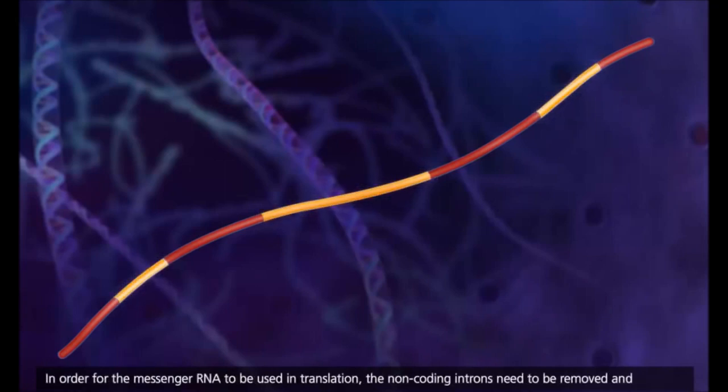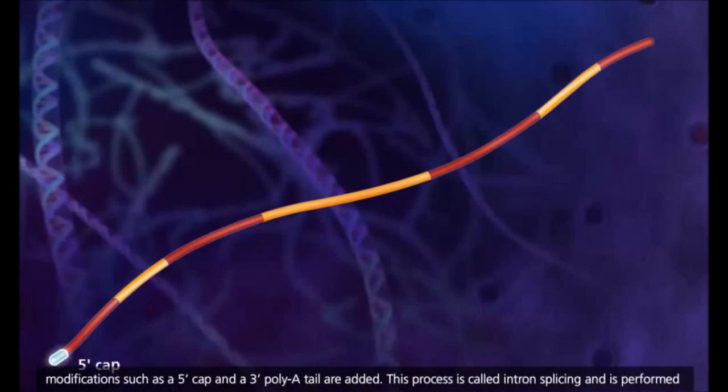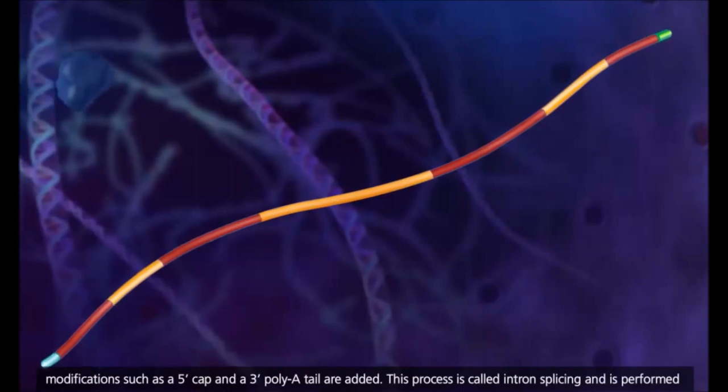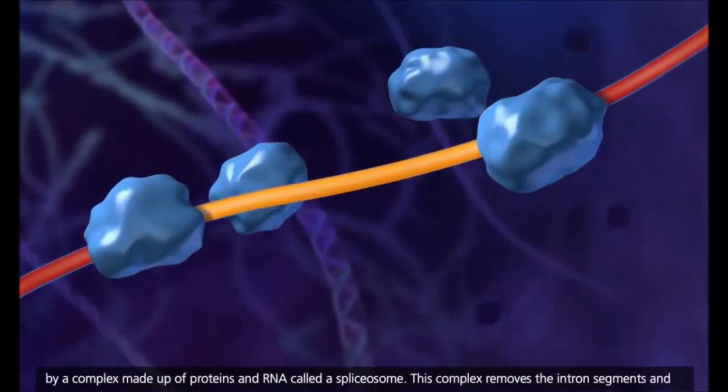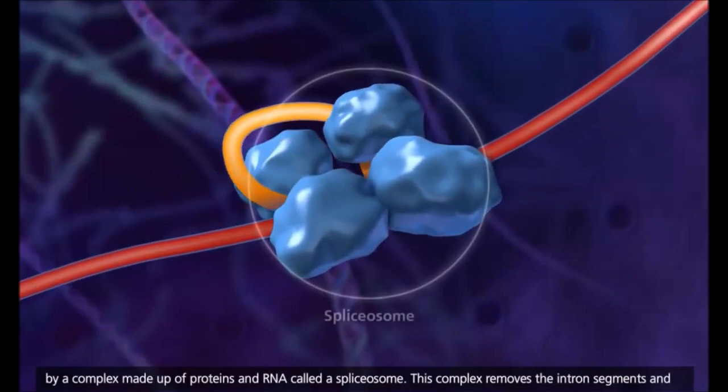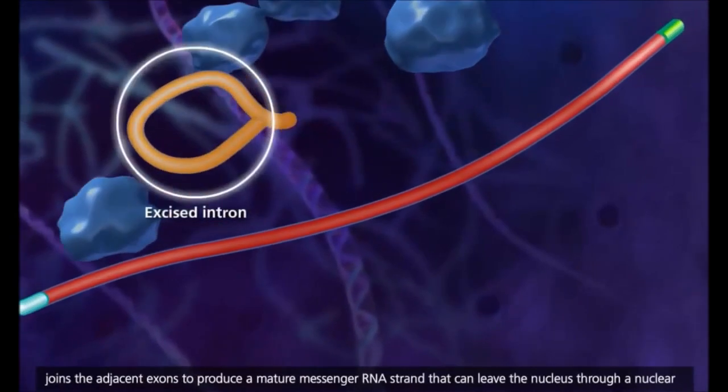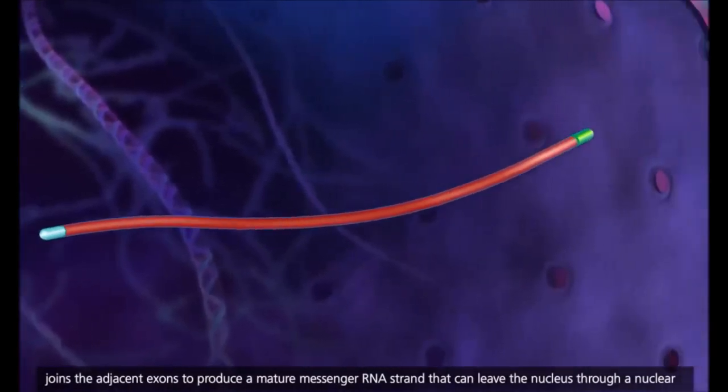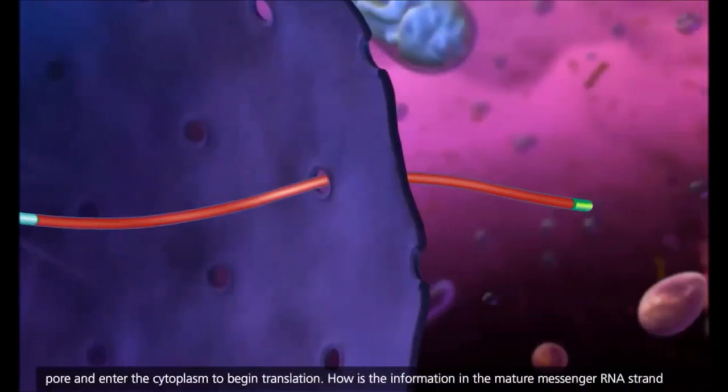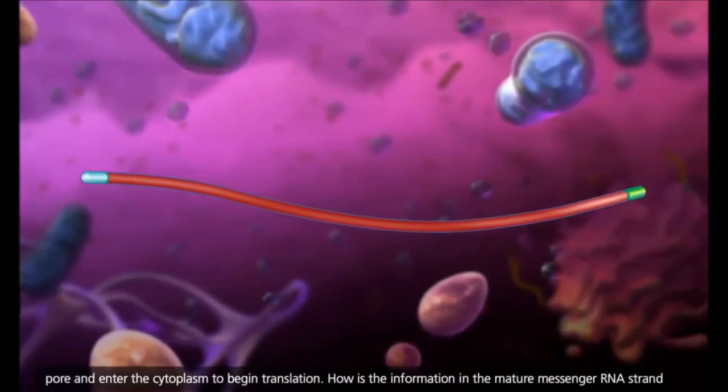In order for the messenger RNA to be used in translation, the non-coding introns need to be removed, and modifications such as a 5' cap and a 3' poly-A tail are added. This process is called intron splicing and is performed by a complex made up of proteins and RNA called a spliceosome. This complex removes the intron segments and joins the adjacent exons to produce a mature messenger RNA strand that can leave the nucleus through a nuclear pore and enter the cytoplasm to begin translation.